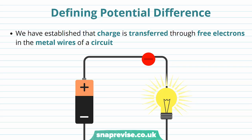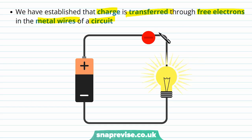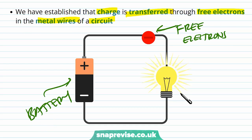First of all we need to understand what we mean by potential difference. We have established that charge is transferred through free electrons in the metal wires of a circuit. We have free electrons in the metal wire, a battery, and a lamp. Electrons are charged particles, so as they move around the circuit charge flows, and current is the rate of flow of charge.